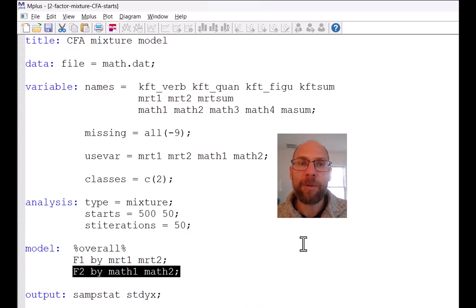By default Mplus will hold all parameters of the factor model equal across classes except for the factor means. Factor means will be freely estimated in all classes except the last class. In the last class the factor means are fixed to 0 for identification, and then the other means in the other classes are estimated and can therefore be directly compared to the last class. All other parameters of the factor model by default in Mplus are constrained to be equal across classes including the factor loadings, the intercepts, the residual variances, the factor variances, and the factor covariances.